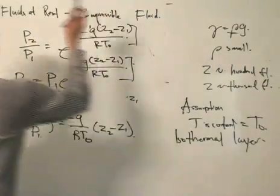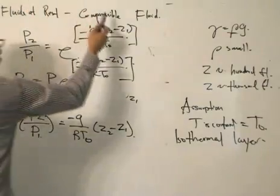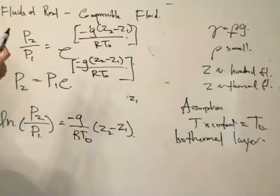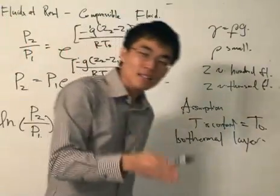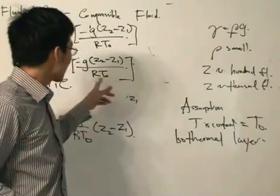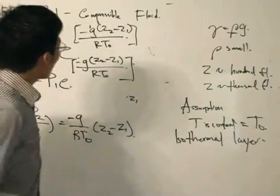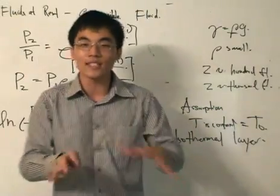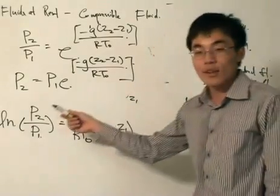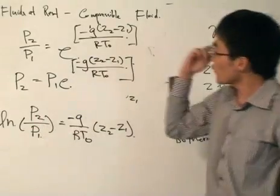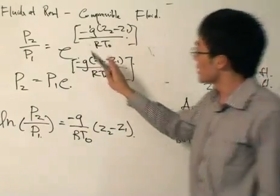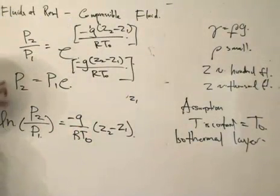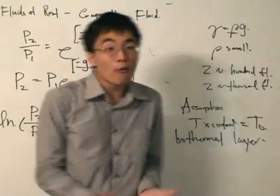We are analyzing a compressible fluid at rest, so the specific weight and density change, and we must use the perfect gas law. We have also imposed the isothermal condition, so temperature is constant at T₀. To summarize: for a compressible isothermal fluid, use this equation; for an incompressible fluid, use the previous equation; for a compressible fluid with non-constant temperature, another equation is needed. The pressure change for a compressible fluid in an isothermal layer is given by p2 = p1 · e^(-g(z2 - z1)/(RT₀)).